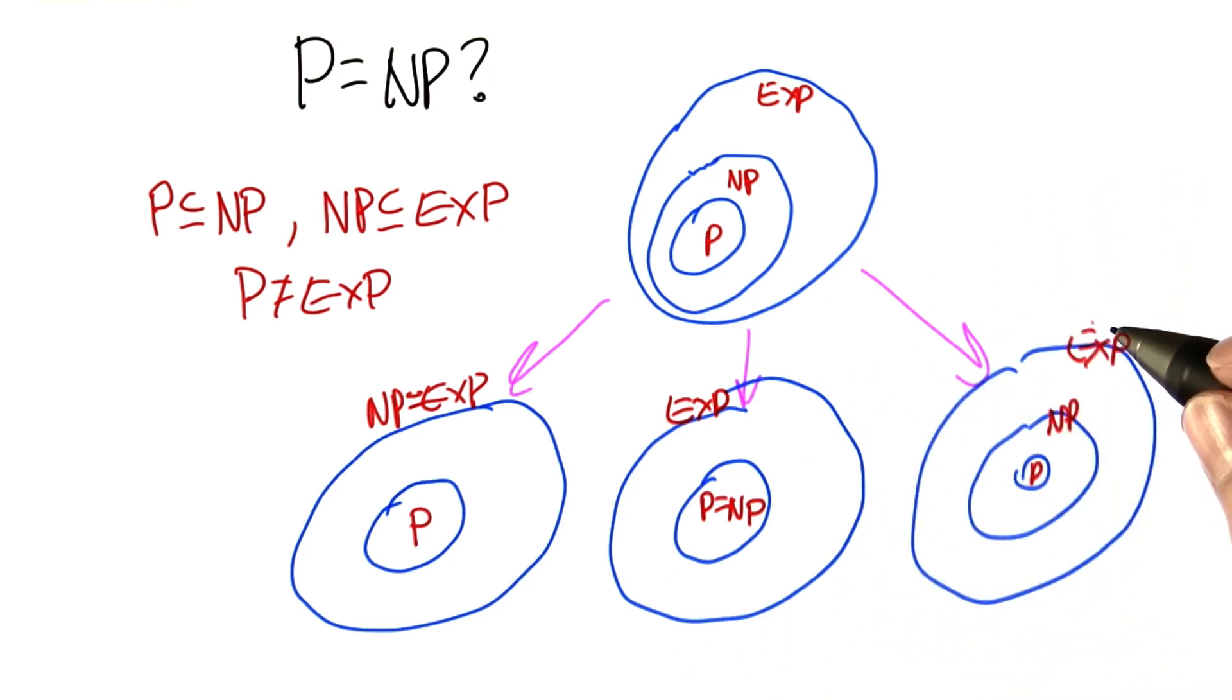Or, it could very well be that there are really three different categories here, that problems that are in NP don't necessarily require exponential time, but they may not be solvable in polynomial time either.